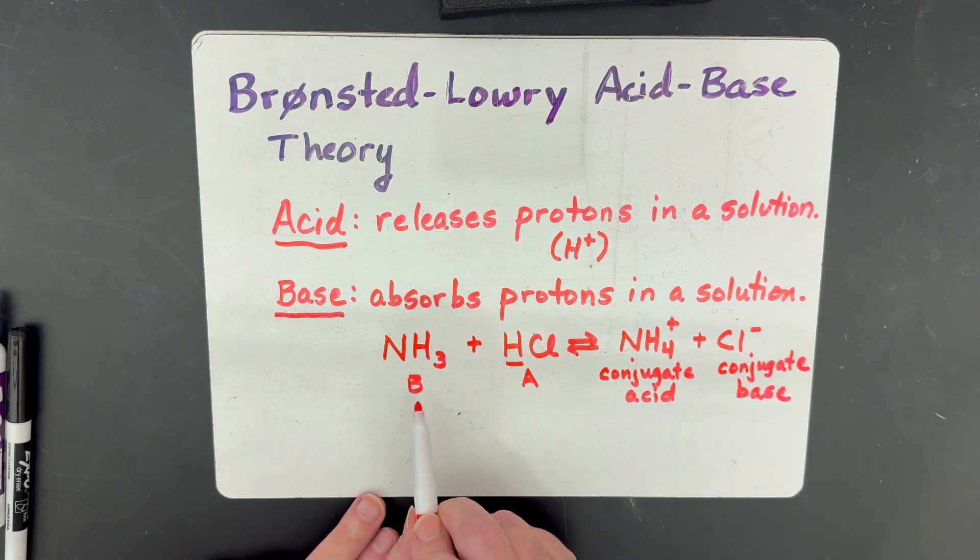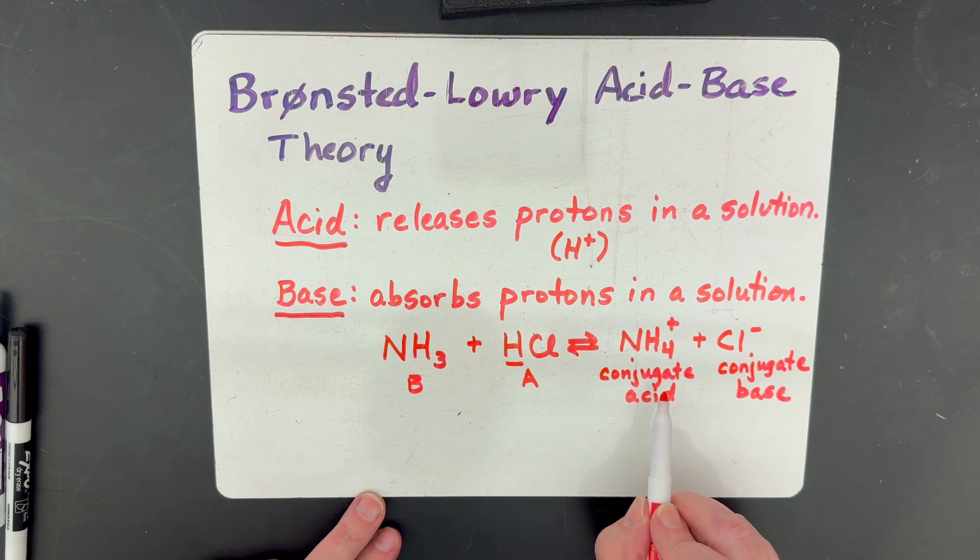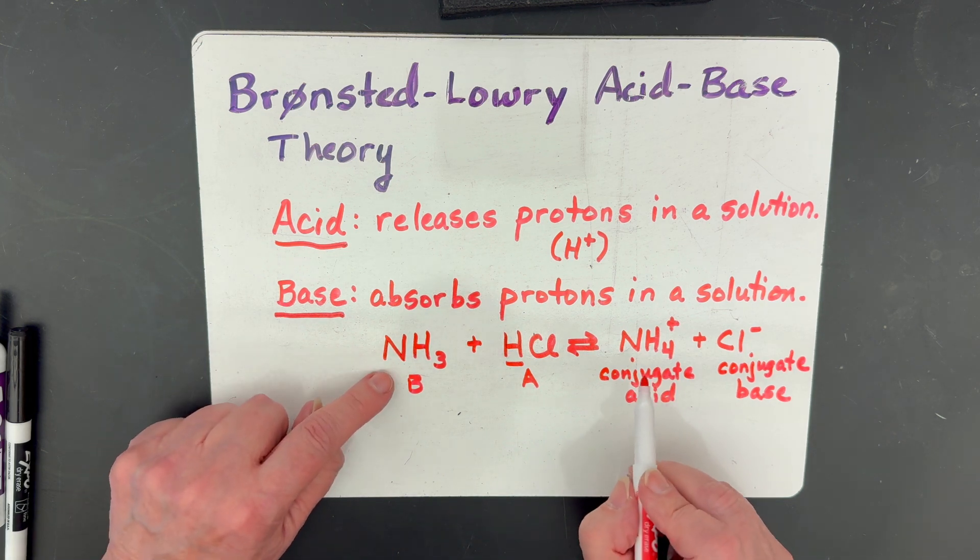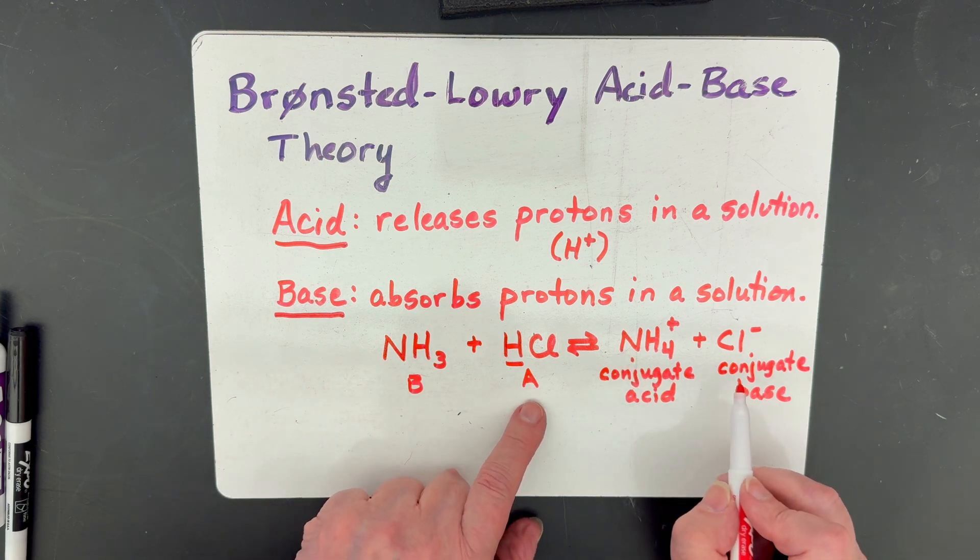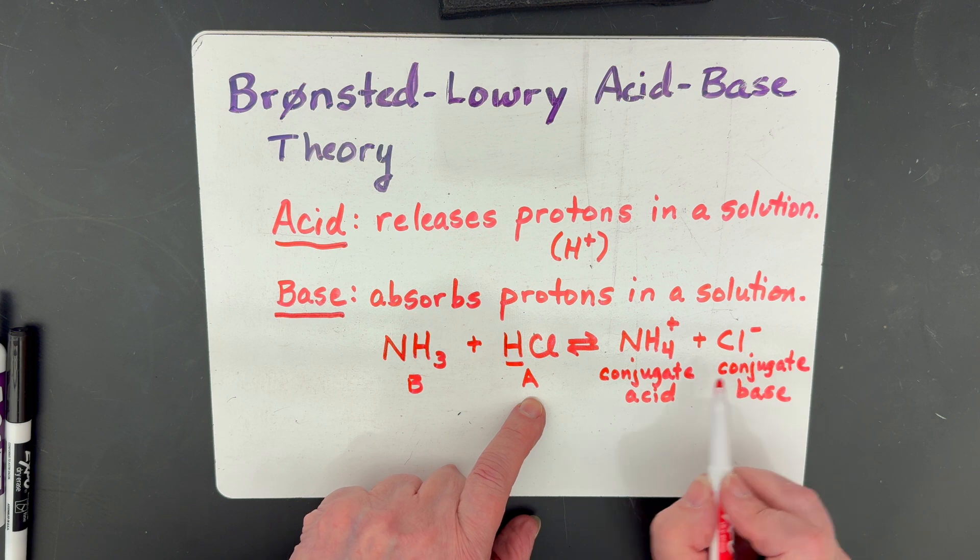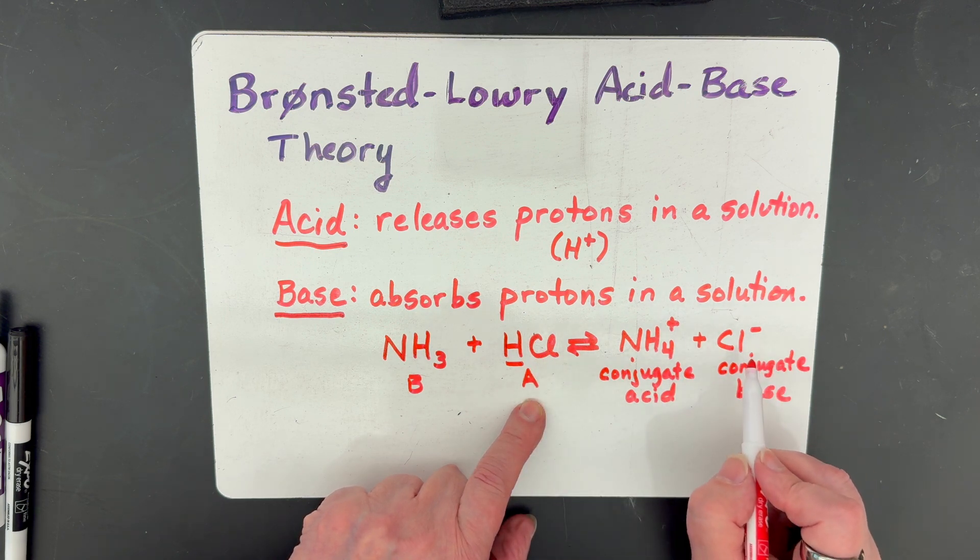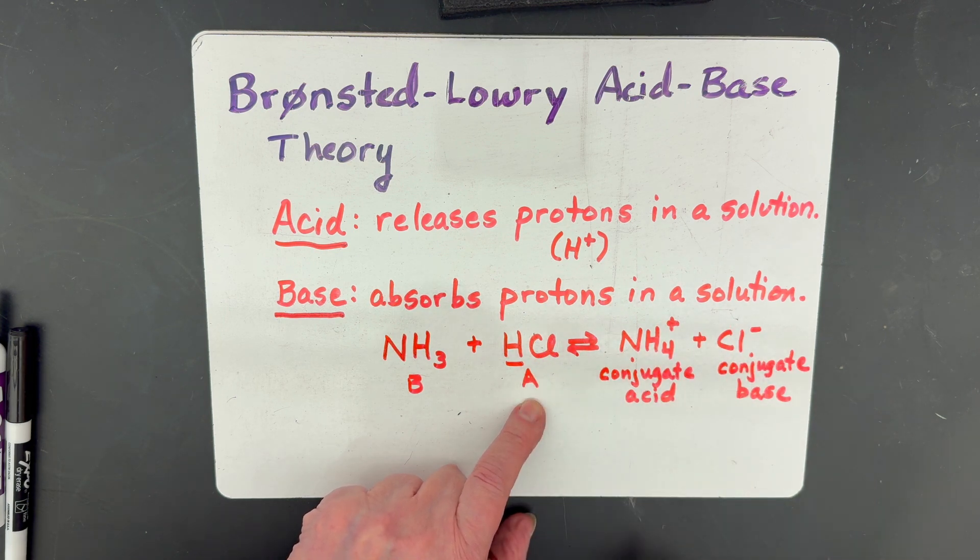The base on this side always becomes the conjugate acid. Don't look at the hydrogens. Look at the things that are not hydrogen. So our nitrogen, nitrogen. And then our acid becomes our conjugate base, because if it loses a hydrogen going this way, it has to gain a hydrogen to get back.